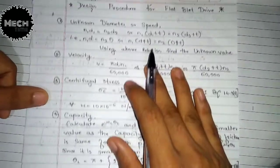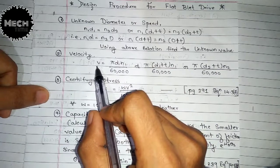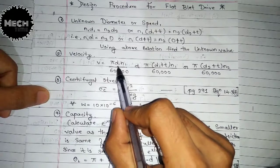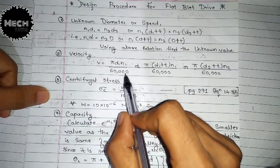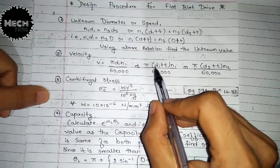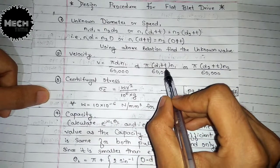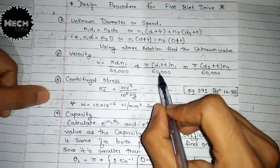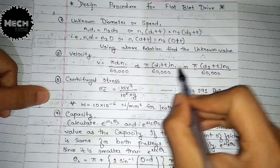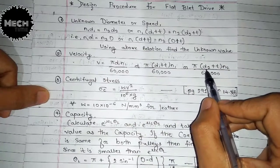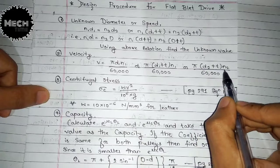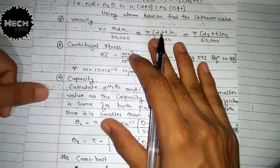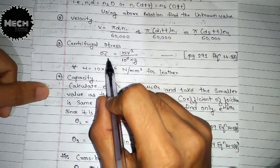Step 2: find the belt velocity. The velocity formula is v = πd₁n₁ / 60,000. If belt thickness t is to be included, it becomes v = π(d₁ + t)n₁ / 60,000. Similarly for the driven pulley: v = π(d₂ + t)n₂ / 60,000.